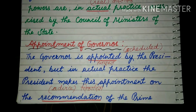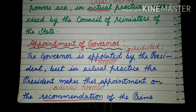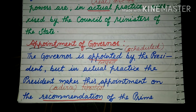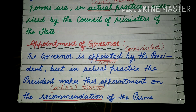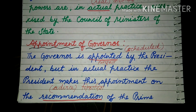The Governor is appointed by the President — जो अपना Governor होता है वो President द्वारा नियुक्त किया जाता है. But in actual practice, the President makes this appointment on the recommendation of the Prime Minister. वास्तव में President भी Prime Minister की recommendation — यानि advice, suggestion, सिफारिश — के आधार पर उस Governor को appoint करता है.